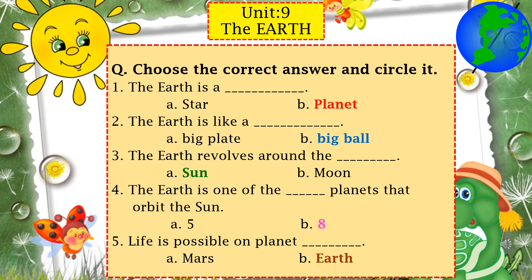Number five: life is possible on planet Mars or Earth? Yes, on planet Earth — because only on planet Earth, land, water, and air are there to make life possible. Allah has gifted the planet Earth with enough water and air, so with these blessings only life is possible on planet Earth, not on Mars.